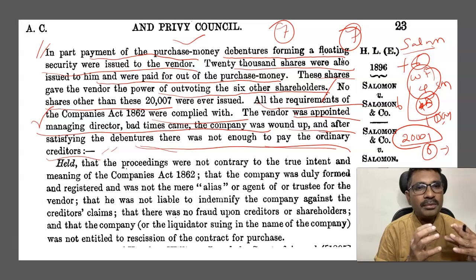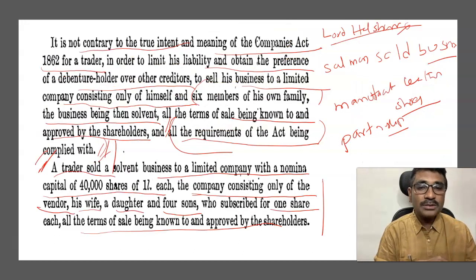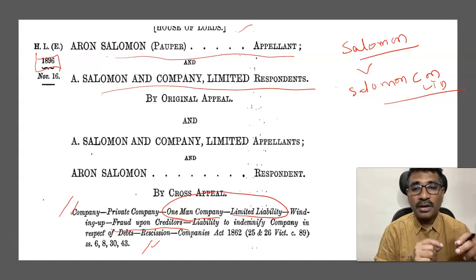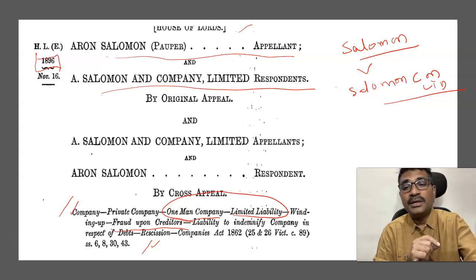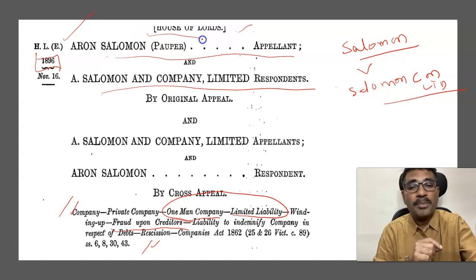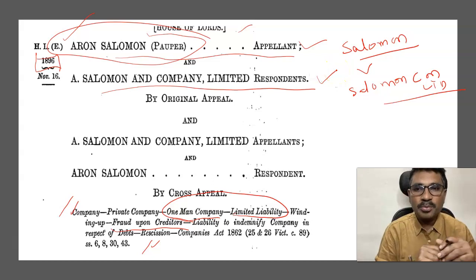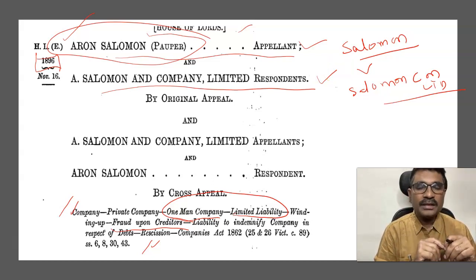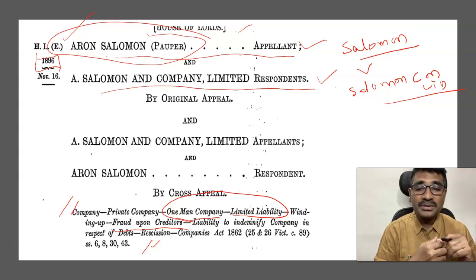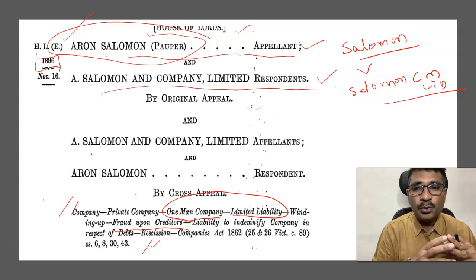When the company became insolvent, the case was brought before the court of law by none other than Mr. Solomon the pauper. He became insolvent and brought a case against the company he had incorporated, claiming that he should be paid money first as a creditor, and then others should be paid later. This was the original application. Let us see how the case came before the UK courts.